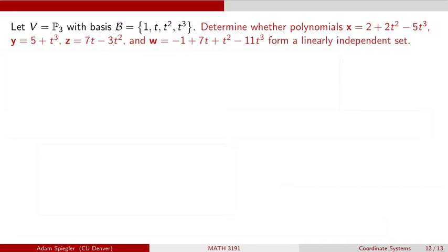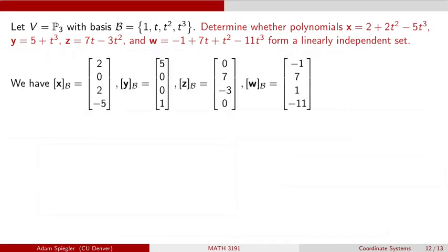And this is a really tricky question, right? I want to know, is there some number I can multiply this polynomial by and then add some other weight times this one plus some other constant times this one plus some other constant times this one so that all of the terms cancel out and we get the zero vector, which in this case would just be the zero polynomial. So that is a tricky question, but putting some coordinates into this problem are going to help us use matrices and what we know about linear independence of vectors to help answer this question.